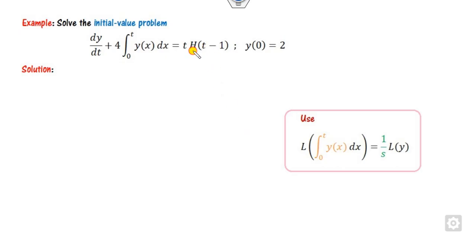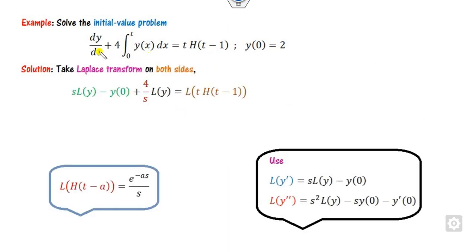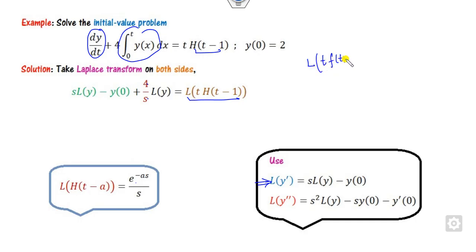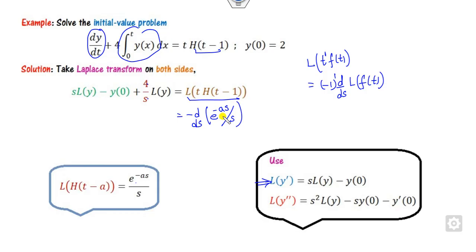Now look at the fifth example. Again there is a step function but with integration. Remember: the Laplace of a single integration is 1/s times L(y), and for double integration it is 1/s-squared. Take the Laplace on both sides. The Laplace of the derivative is the standard formula, the 4/s term, and the step function gives its Laplace form. To solve the Laplace of t times the step function, since it is t raised to power 1, you can write it as minus d/ds of the Laplace of the step function e raised to power minus s, then take the derivative to get the answer.